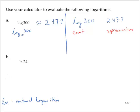Natural log is the log base E of, in this case, 24. Where E is the Euler number and is approximately 2.718.